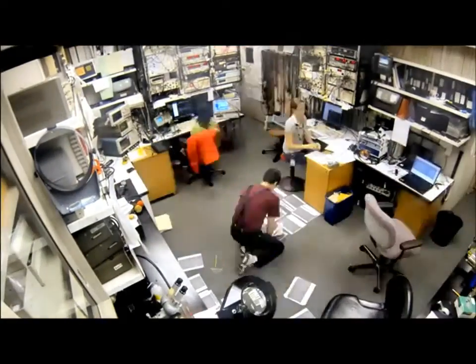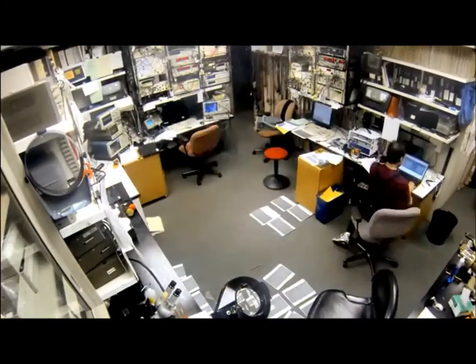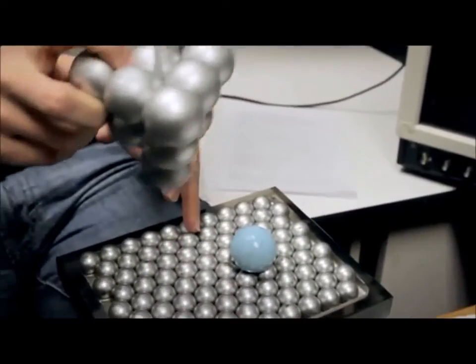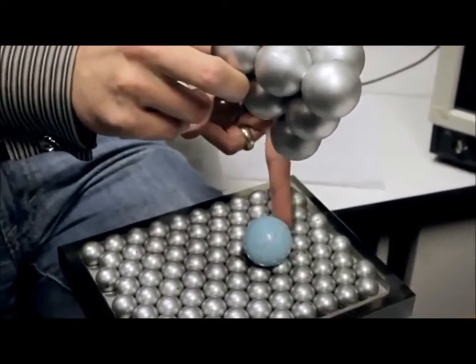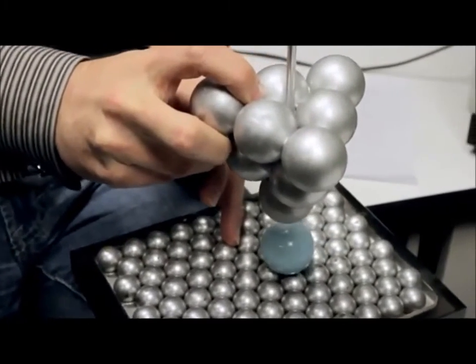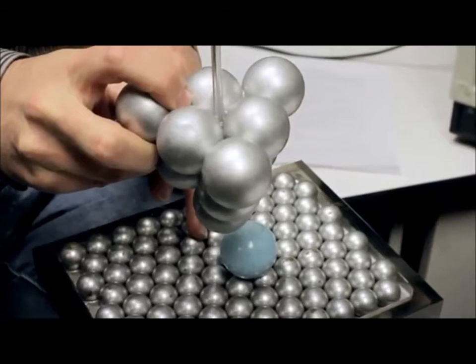We're using two scanning tunneling microscopes to make this movie. First, we need to look at the surface and we need to figure out where the atoms are. So here we have the atom that we want to move. Here we have our needle. And we switch between the imaging mode, where I stay relatively far away, to the moving mode, where I get close in. And now these two atoms are so close that they chemically react with each other.